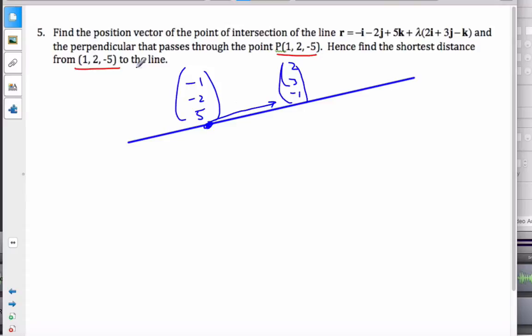We want to show, we want to find the perpendicular that passes through this point here. So somewhere here, let's say, somewhere here is the point (1, 2, -5). And the perpendicular that passes through that point. So I'm looking for that. In order to be the perpendicular, it's going to be perpendicular. And then the second part is to find this distance.